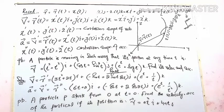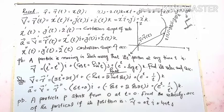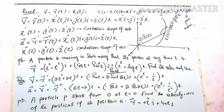Here x prime, y prime, and z prime are the Cartesian components of the velocity vector of the moving particle. x prime(t) is the component along the x-axis, y prime(t) is along the y-axis, and z prime(t) is along the z-axis.